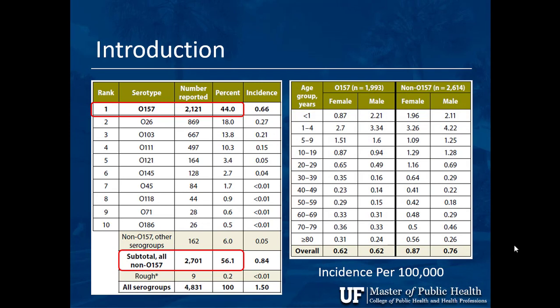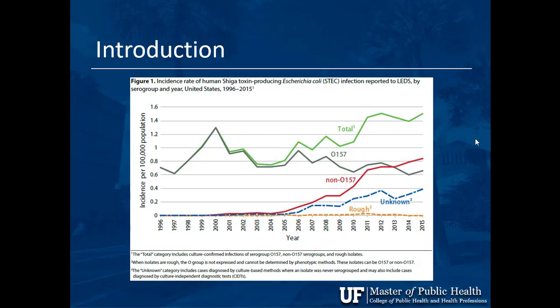Looking at age groups from less than 1 year old all the way up to 80, divided by O157 versus non-O157 and by female versus male, the age group with the highest incidence of Shiga Toxin-producing E. coli is ages 1 to 4. This might suggest developing or weakened immune systems.